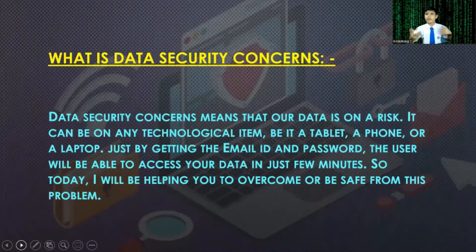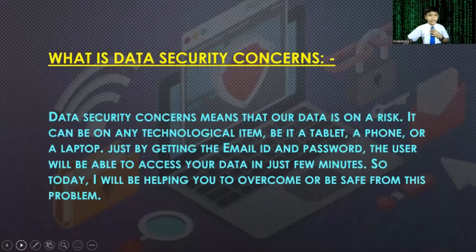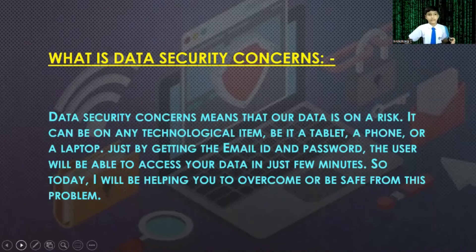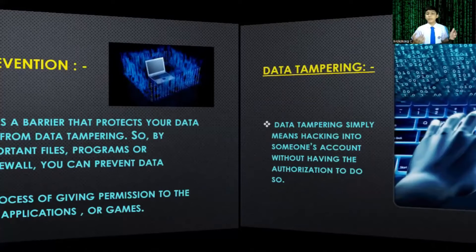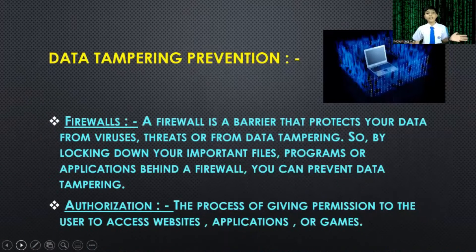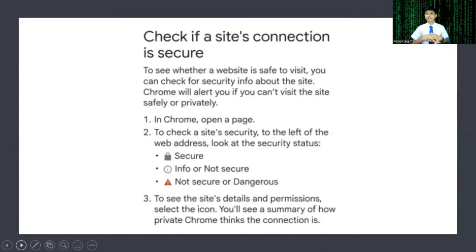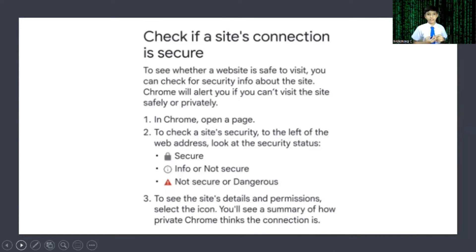Data security concern basically means that your data on a technological item is at risk. One type of data security concern is data tampering, which means that anybody can hack into your account without authorization. Preventions include firewalls, which act like a barrier and protect important files, and authorization, which means the process of giving access to websites, games, and so on. To check if a site is secure, you can use three icons to see if the website is safe or not. Thank you. Bye.